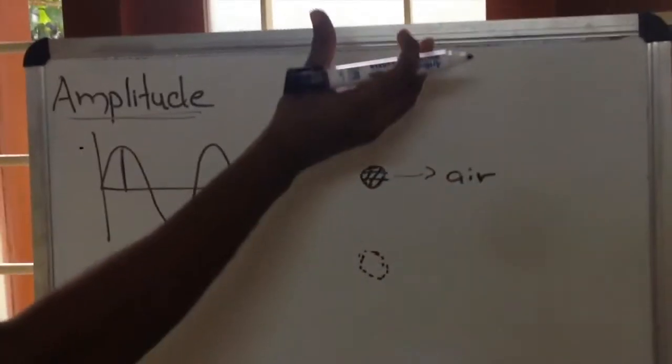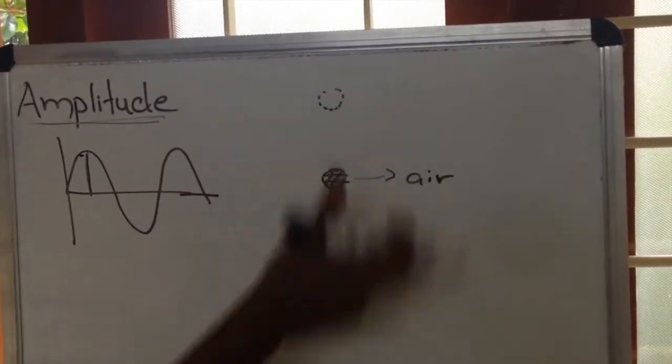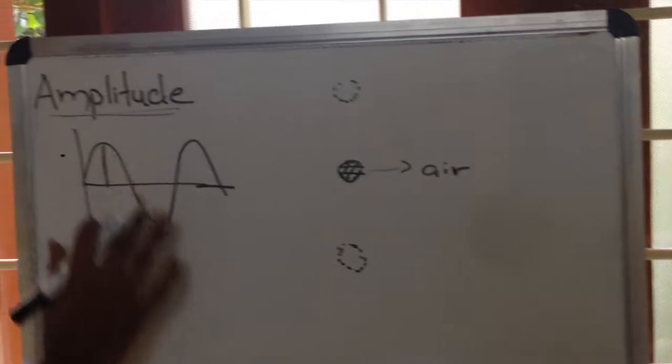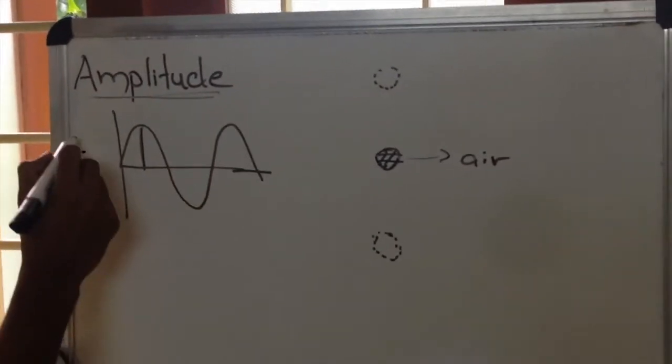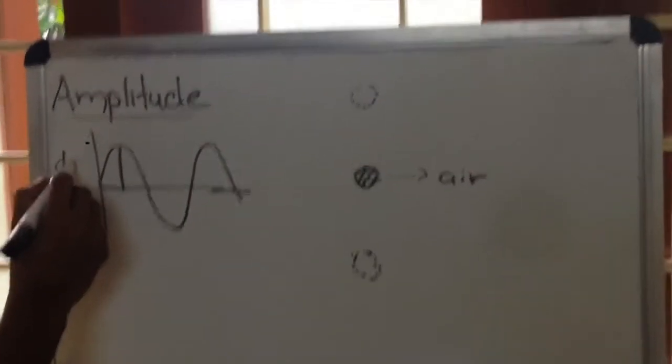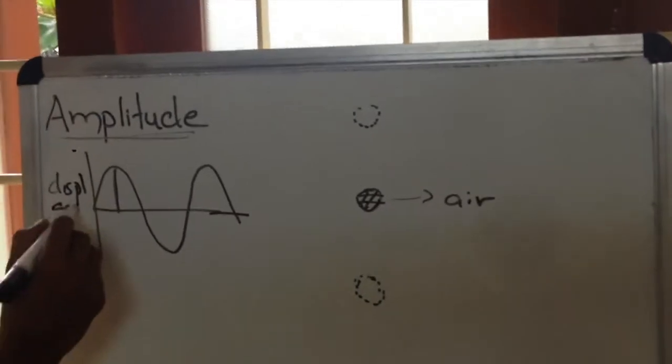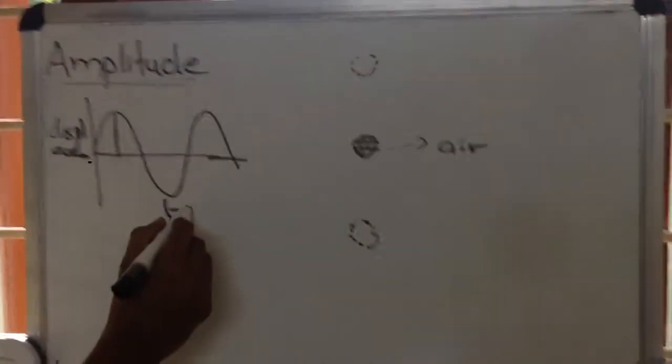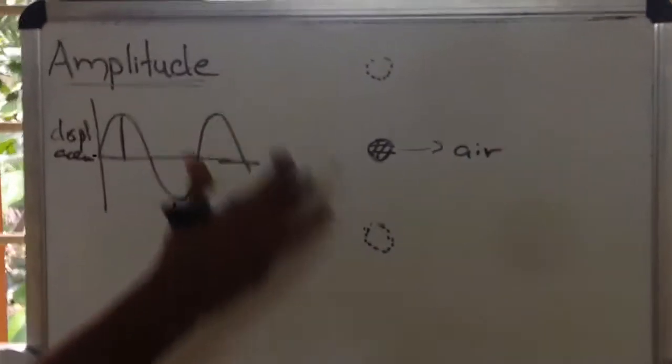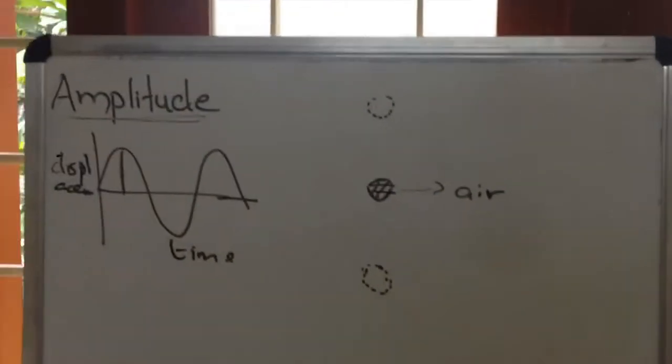When this air molecule is vibrating, we can change that vibration into graphical representation like this, where we are plotting displacement and time. We can obtain a graphical representation like this, and it was previously shown.